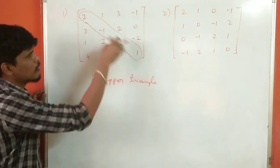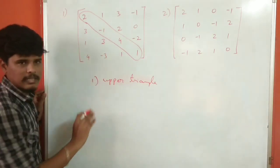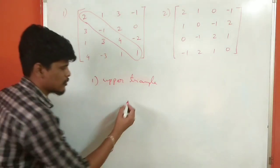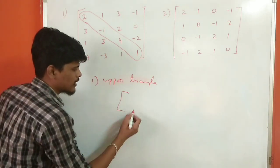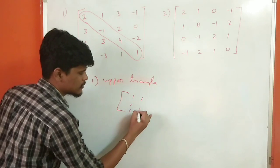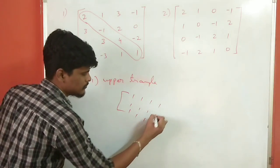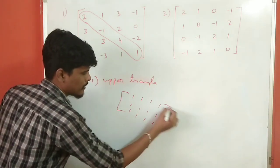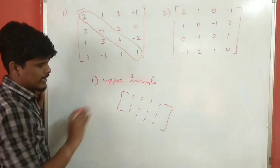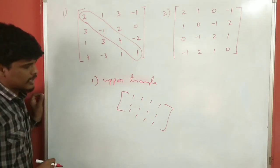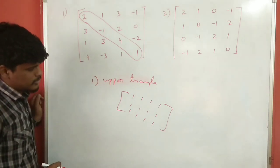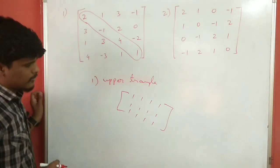This is a 4x4 matrix. This is the diagonal. Now, consider a 3x4 matrix. If you put values in the diagonal and below, we can handle it here.